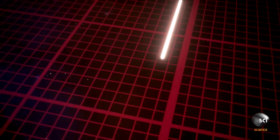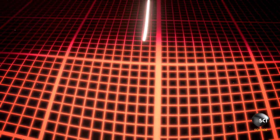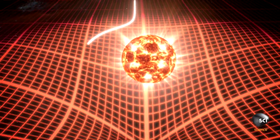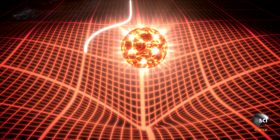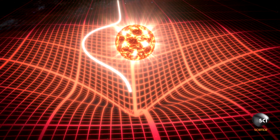In empty space, light travels in a straight line. But place something massive, like our sun, on the fabric of space and its immense gravity warps space. As light travels past the sun, its straight path curves.